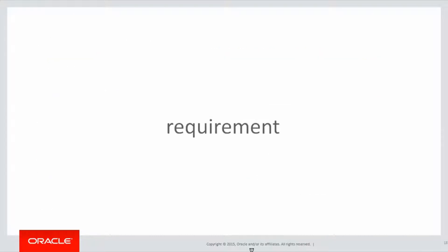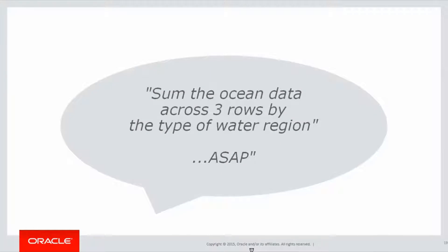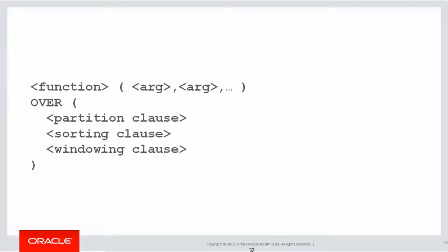Here's the next window clause example, so we can continue doing lots of examples to get expertise with it. We're going to sum the ocean data across three rows by the type of water region. Let's look at how we build this up with an analytic.